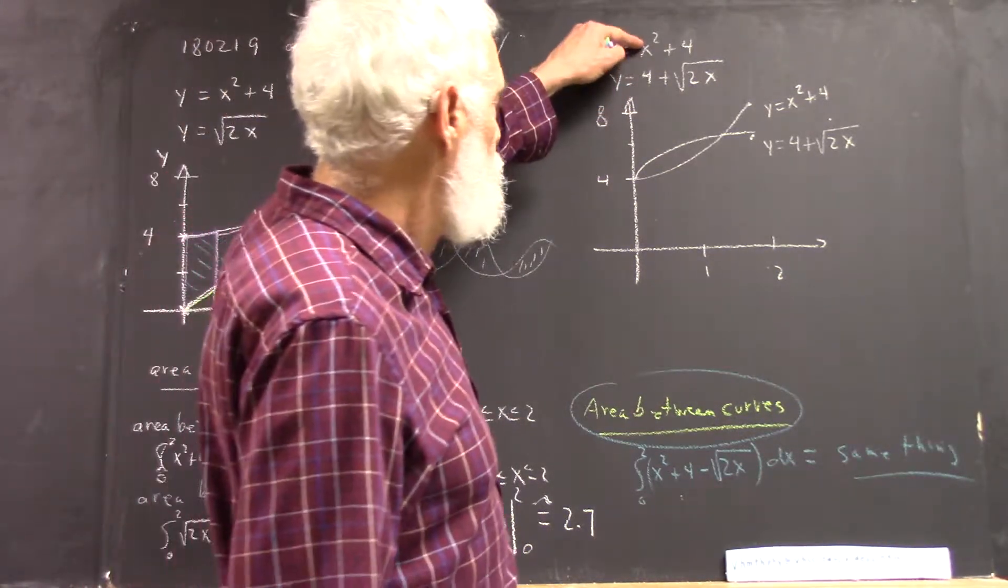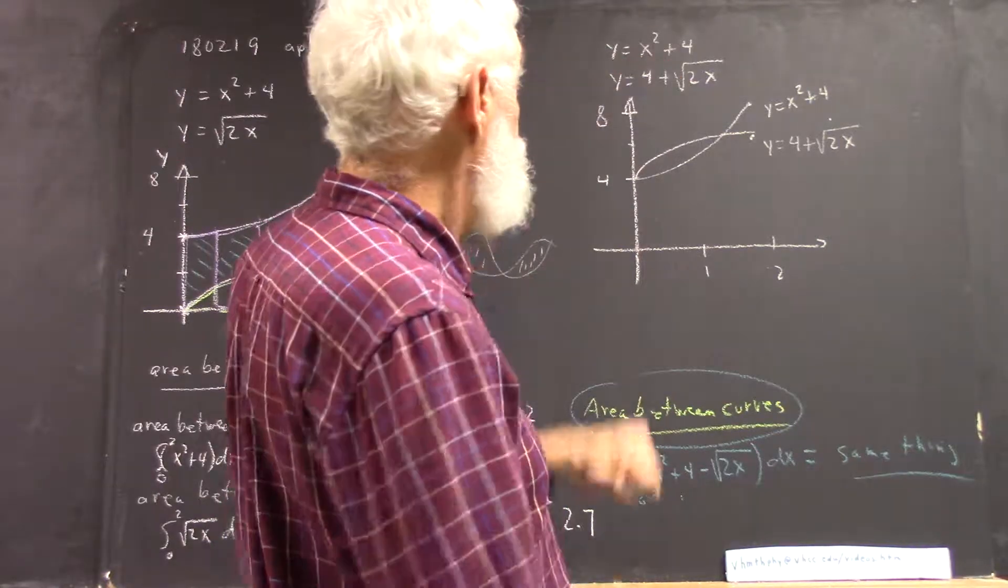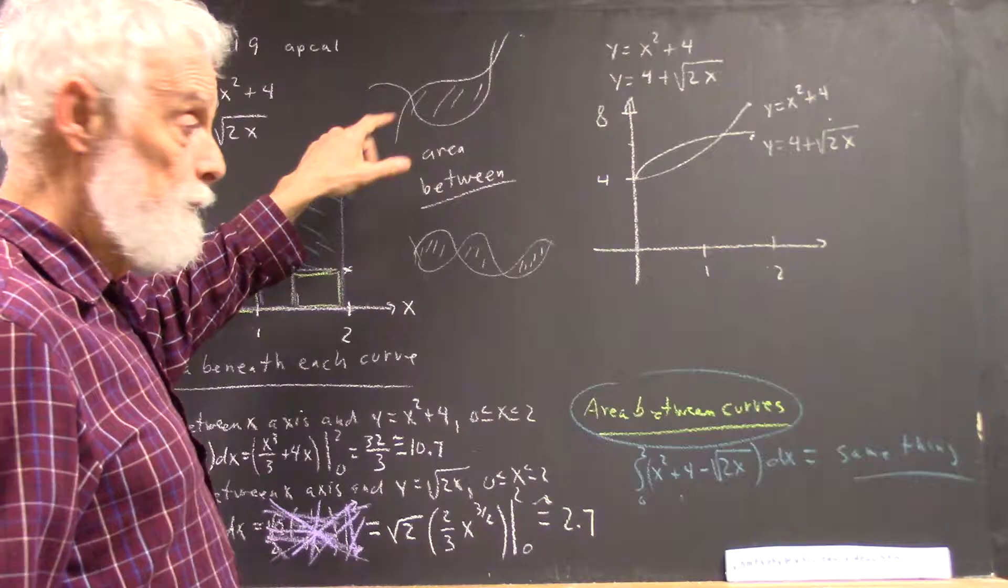Okay, our two functions, x squared plus 4 and 4 plus the square root of 2x, are easy to graph. x squared plus 4 is the same as what we graphed previously.